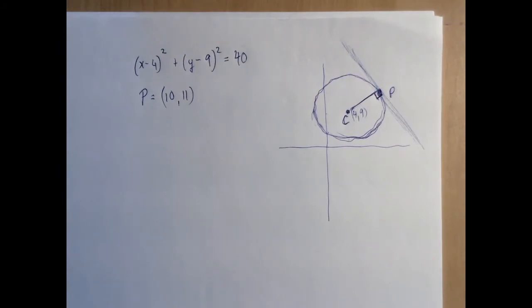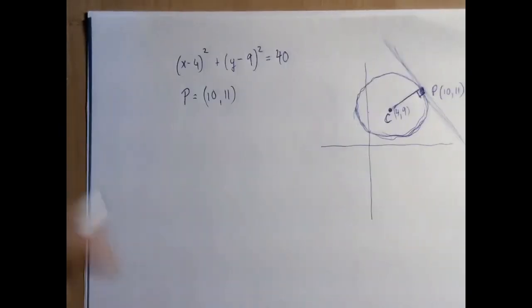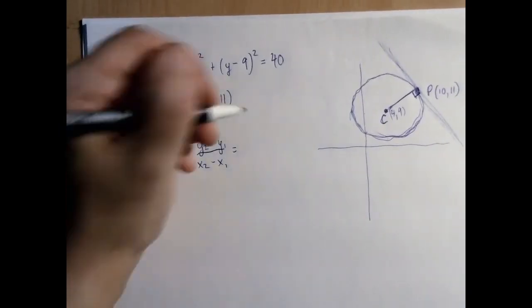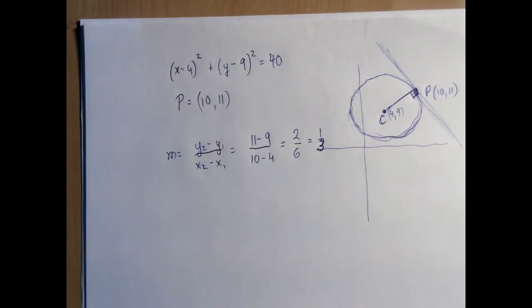Because we know both coordinates of these two points, therefore we can find this slope. Using the slope formula, we have 11 minus 9 divided by 10 minus 4, which is 2 over 6, which is 1 third.